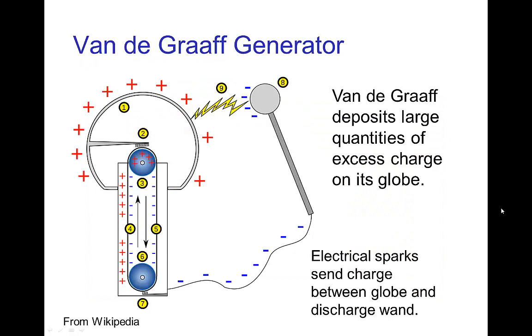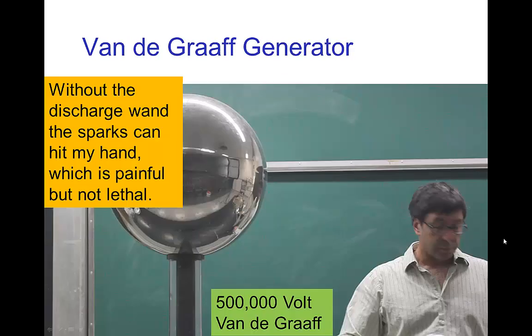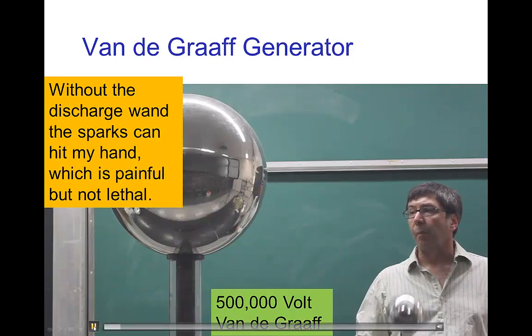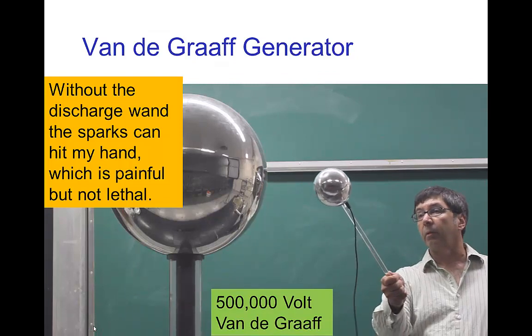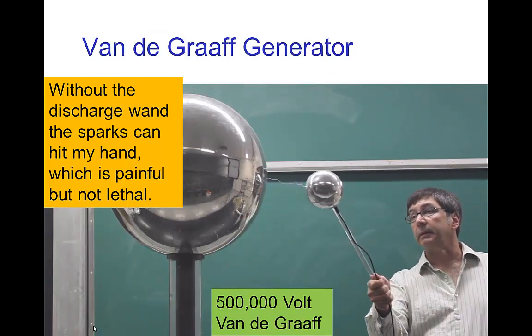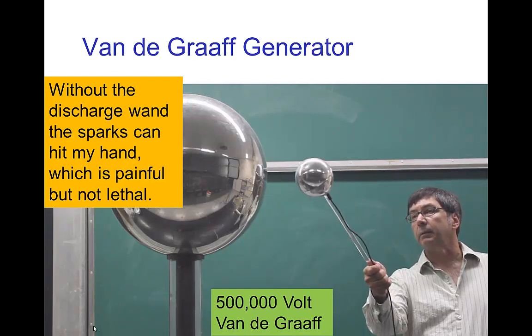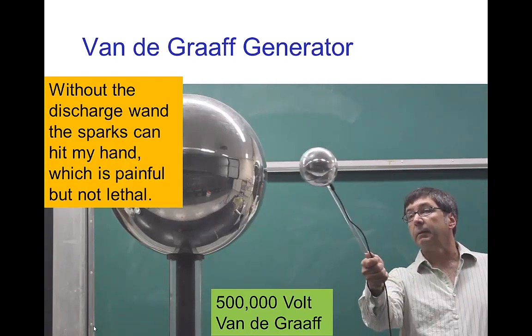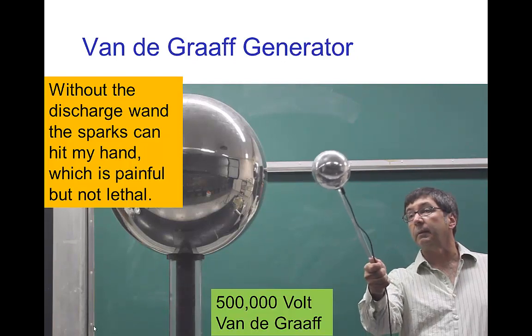Now, we can develop a much higher amount of charge by using devices like a Van de Graaff generator. So let's see an example of this. This is a half million volt Van de Graaff. You can see the sparks coming off of it, so very large amount of charge.